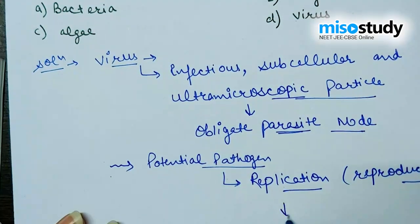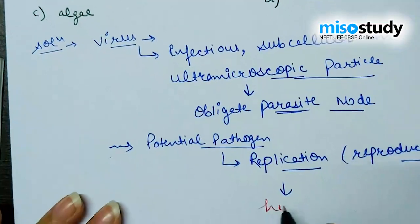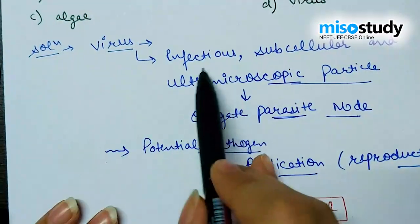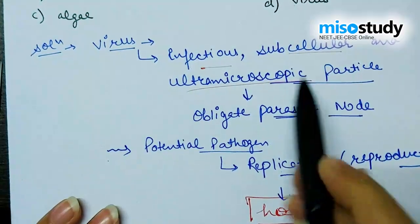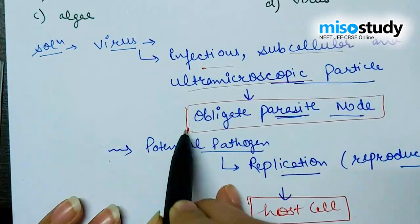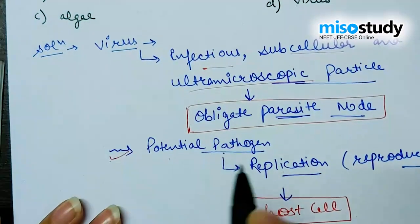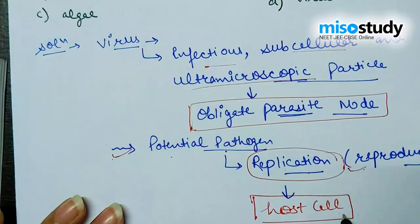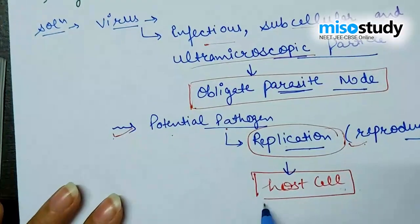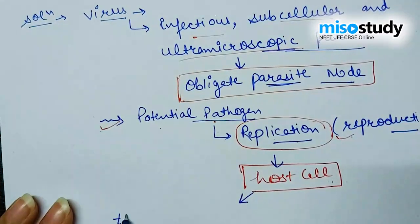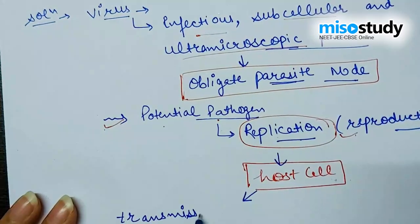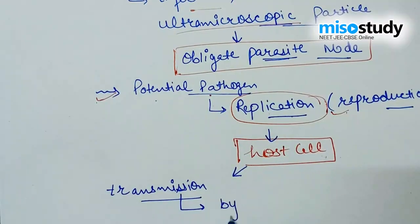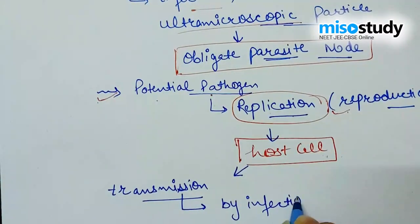Reproduction occurs only in the host cell. Virus is an infectious sub-cellular ultra-microscopic particle acting as an obligate parasite. Virus is a potential pathogen that reproduces — or we can say replicates — only in the host cell, and after replicating they are transmitted to a new host by infection.